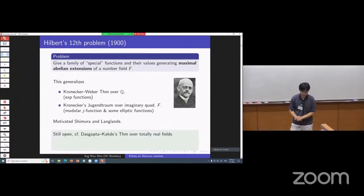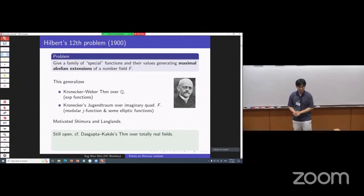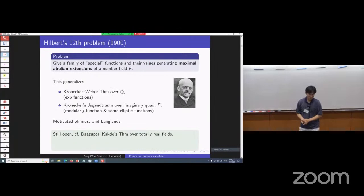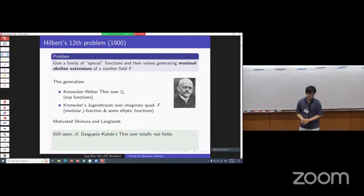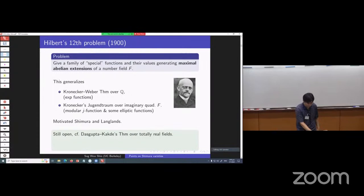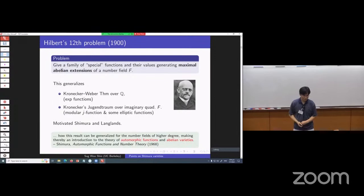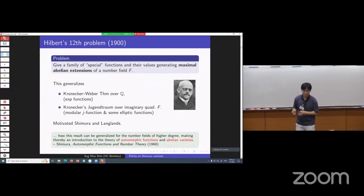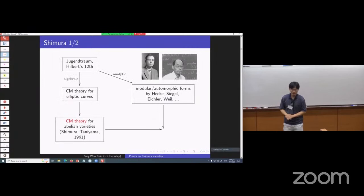This problem is still widely open, but there's some fantastic recent progress by Dasgupta and Kakde, who proved a version of this theorem over totally real fields. That's not the focus of my talk, but I'll quote from Shimura — he thought about this earlier than 1968 — and he says that for a generalization, we want to introduce automorphic functions and abelian varieties.